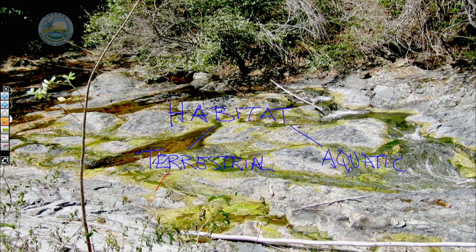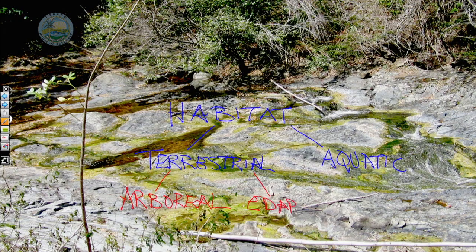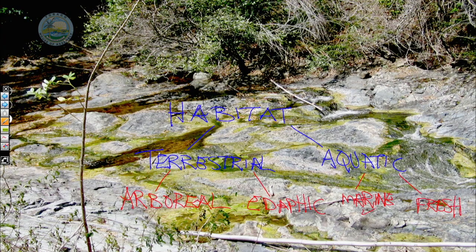We have two main types of terrestrial habitats. We have arboreal, which would be all the organisms found on trees or other plants. And we have edaphic, which would be organisms found in and around the soil. And aquatic, of course, we have marine, which would be your sea-based organisms. And we have freshwater. So your saltwater and your freshwater aquatic environments or habitats.